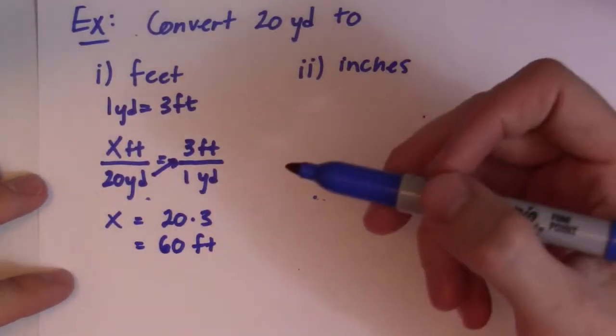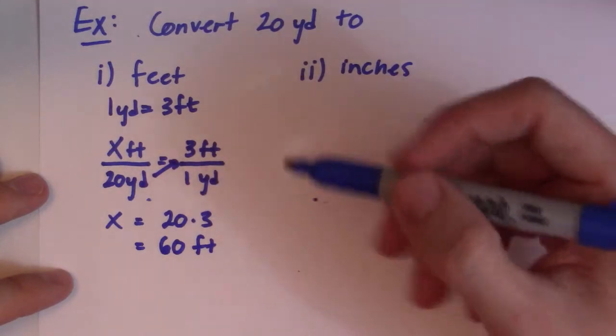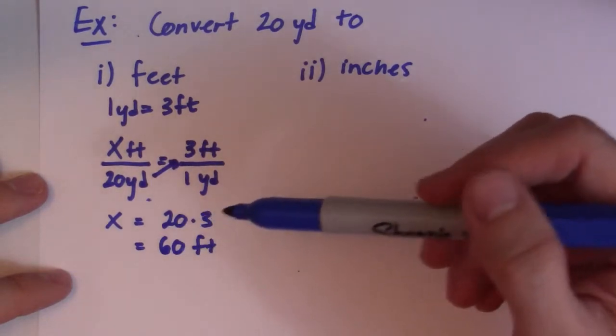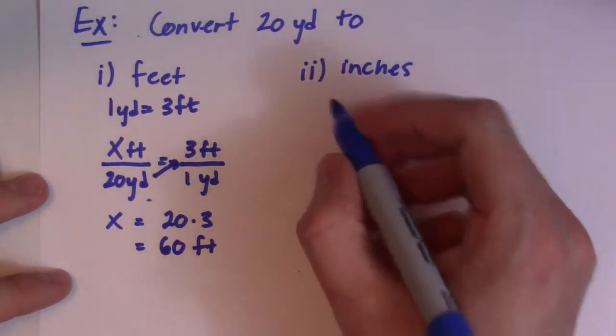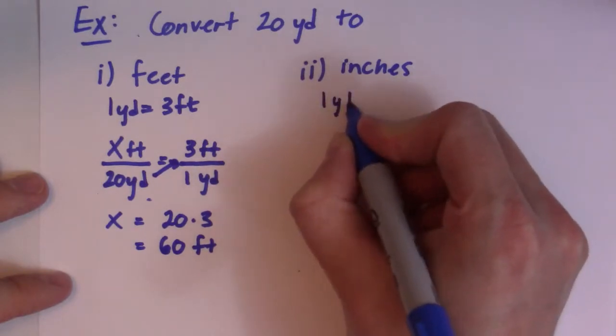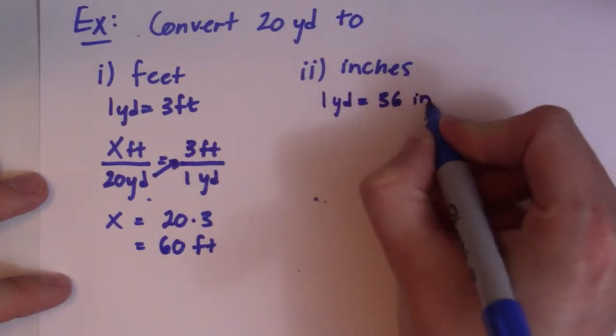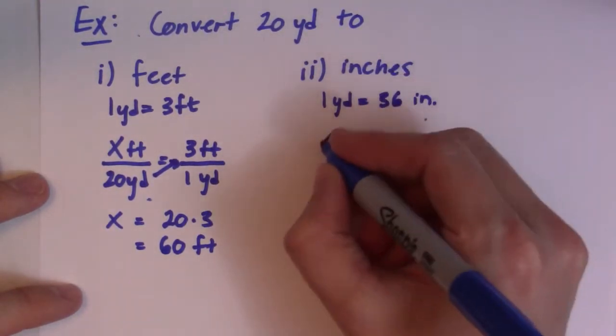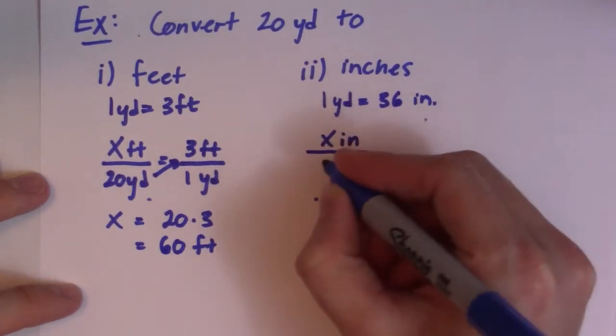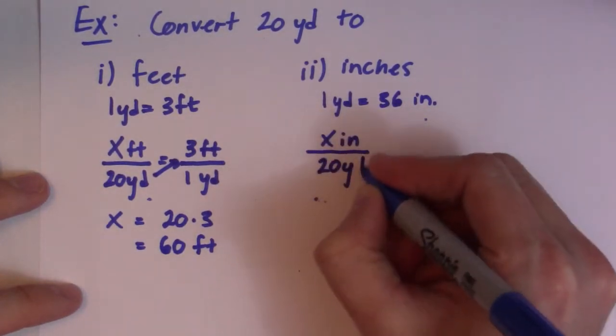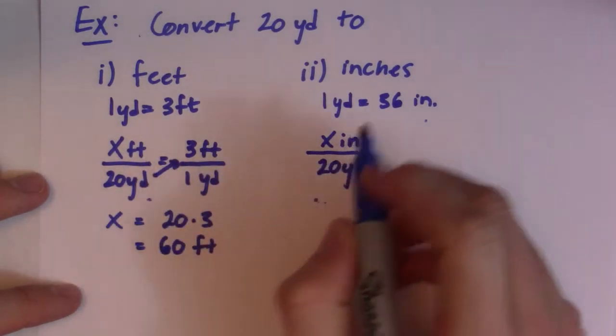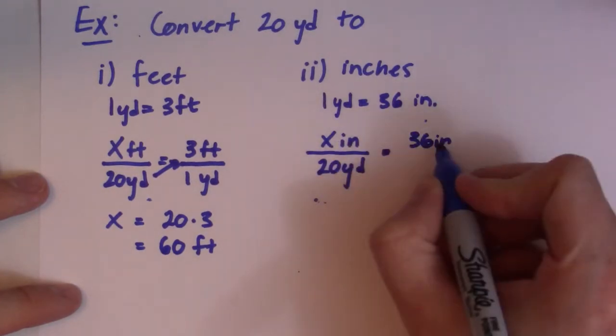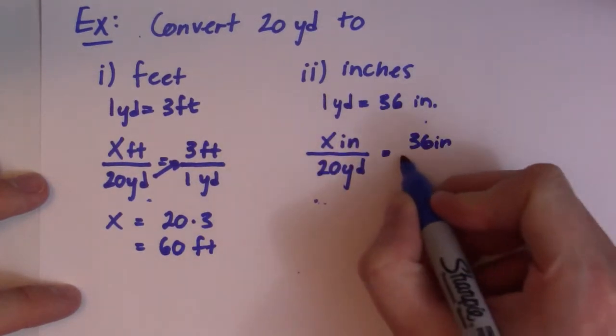The next thing I can do is use the conversion factor that 1 yard is equal to 36 inches. So knowing this conversion factor, I can set up a proportionality statement. I'm looking for inches, so x inches over 20 yards. And then I have 36 inches that goes on top. So I'm matching units. Inches along the top, yards along the bottom, and then 1 yard.